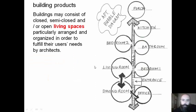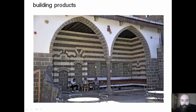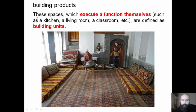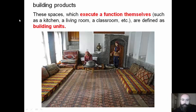These living spaces are particularly arranged and organized in order to fulfill their users' needs by architects. For example, we can see a semi-open living space from the southeast region of Turkey, Diyarbakir — it's called an Iwan. It can also be a fully closed living space, as seen in another example from Diyarbakir houses — a room. These spaces execute a function themselves, such as a kitchen, a living room, or a classroom. We define them as building units; this is the first level of building products.